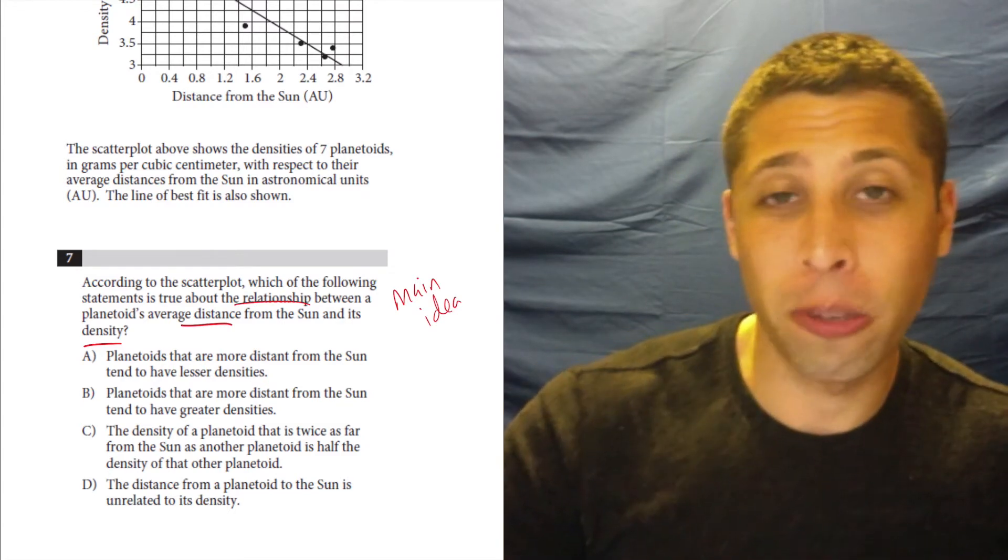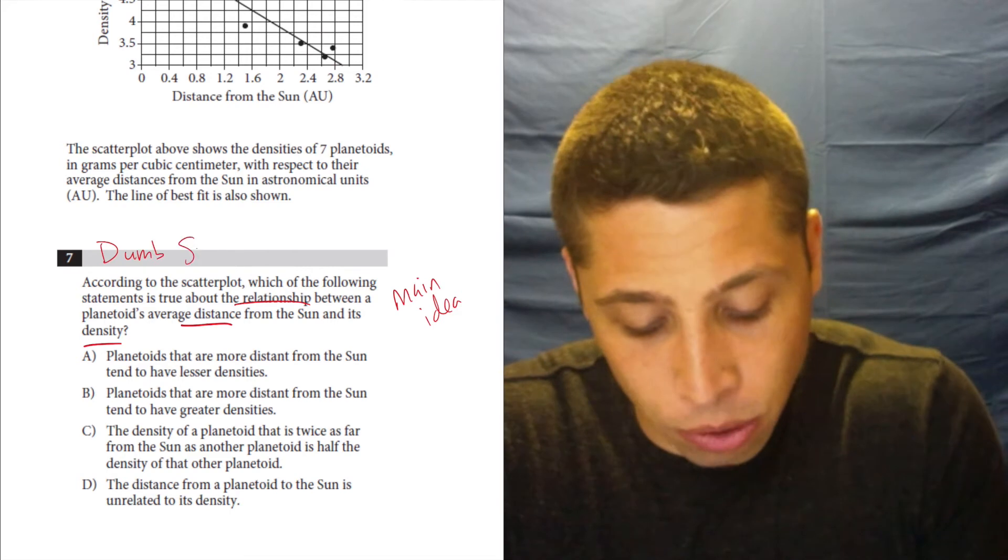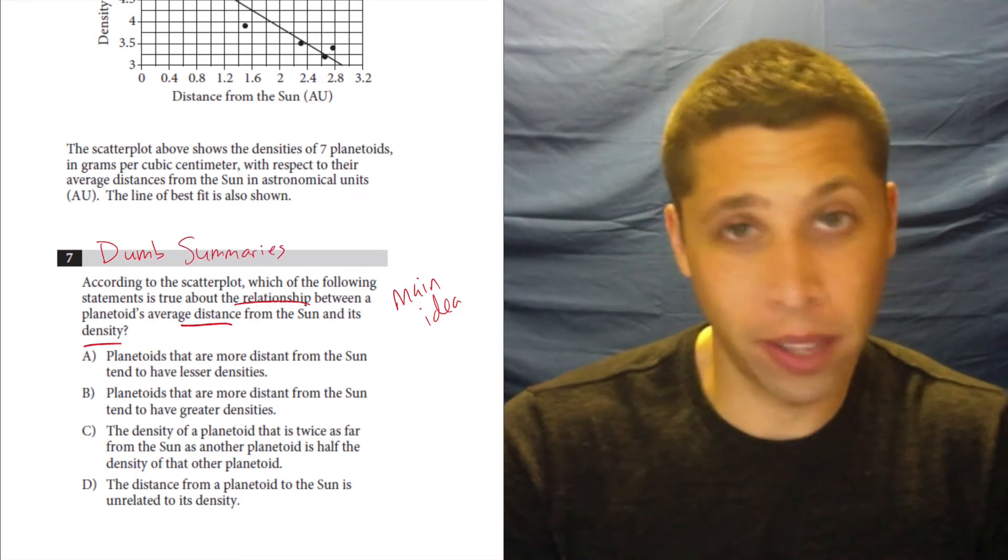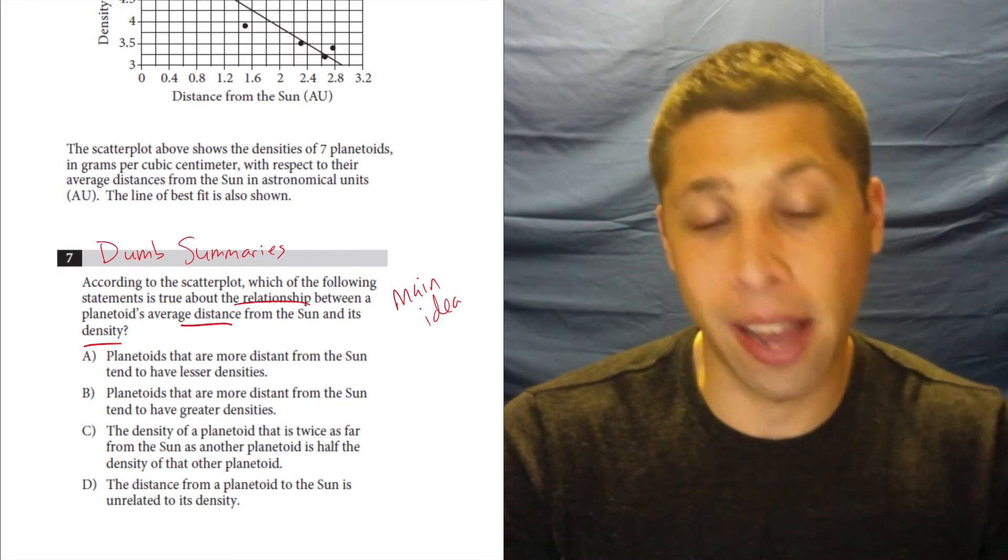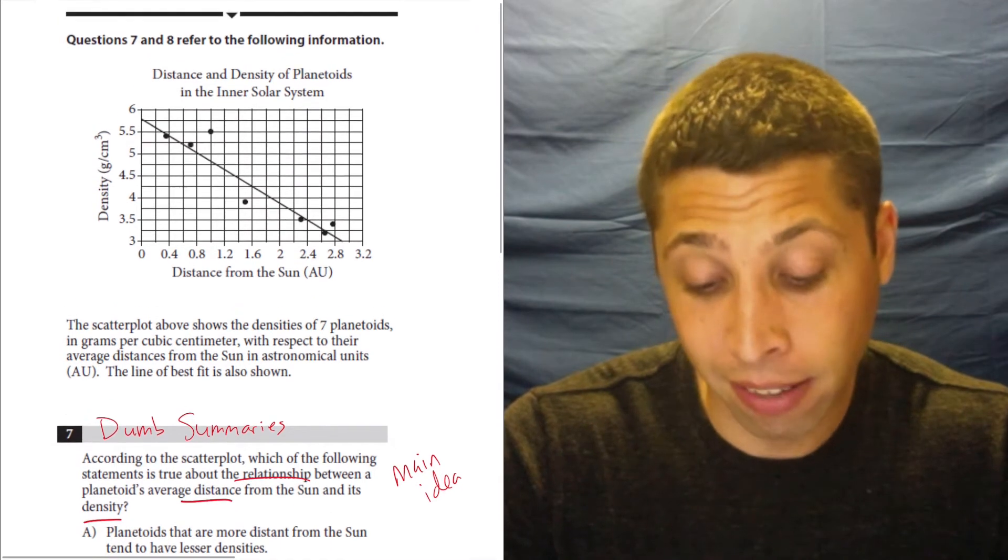So because this is so similar to a reading question, I'm going to use a reading strategy. I'm going to use a dumb summary to help me understand the relationship. I don't want to overthink it. So let's just dumb it down and then compare that dumb version to the choices and if I need to look at it again, I will.